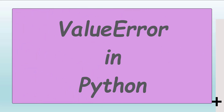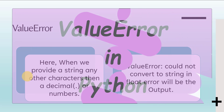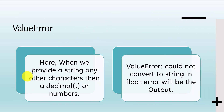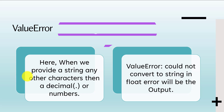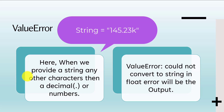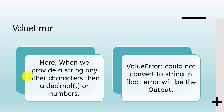ValueError generally occurs when a function receives an argument of the right type but has some inappropriate value. In this case we are converting a string to a float, but if we provide a string with any character other than a decimal or numbers, it will throw ValueError: could not convert string to float.